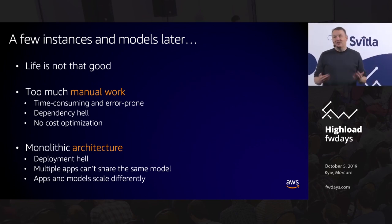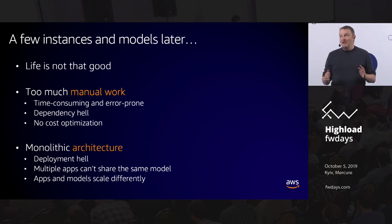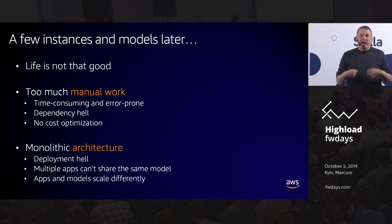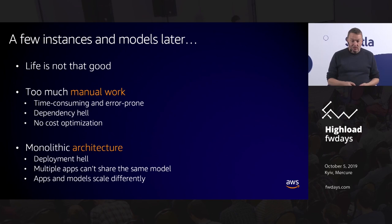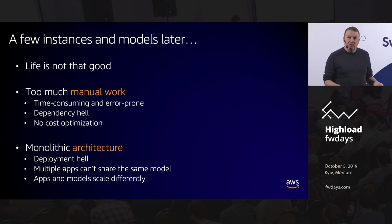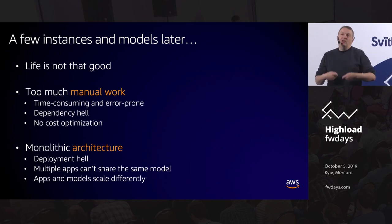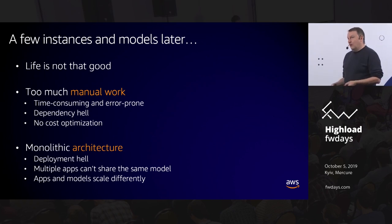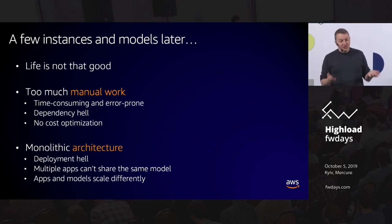After a few instances and a few models, problems start to arise. You keep doing manual work — starting instances, deploying your app, debugging — it's time consuming. The monolithic architecture is painful: every time you update or retrain the model you have to redeploy the whole app, you can't share models, and you can't scale them properly.